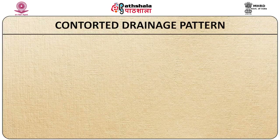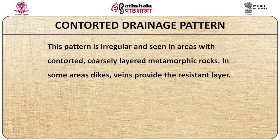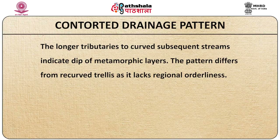Lastly, let us talk about the contorted drainage pattern. This pattern is irregular and seen in areas with contorted layered metamorphic rocks. In some areas, dikes and veins provide the resistant layer. The longer tributaries to curved subsequent streams indicate dip of metamorphic layers. The pattern differs from recurve trellis as it lacks regional orderliness.